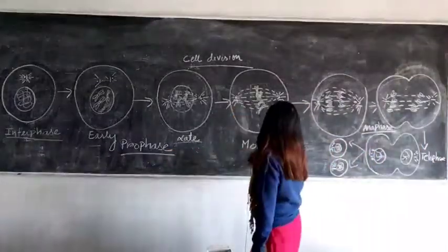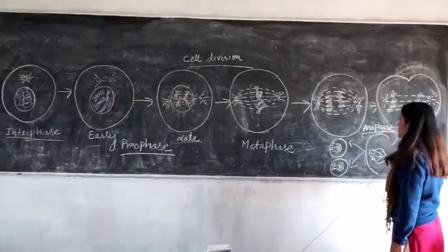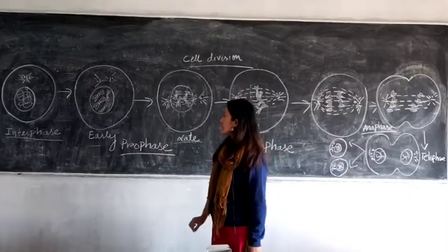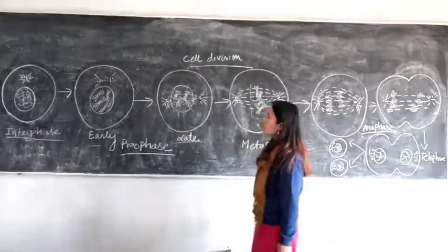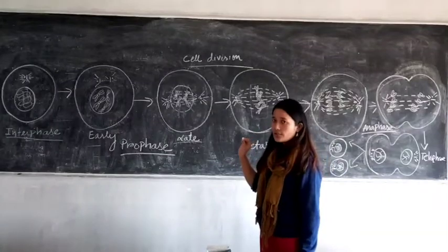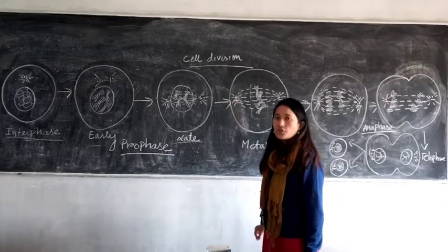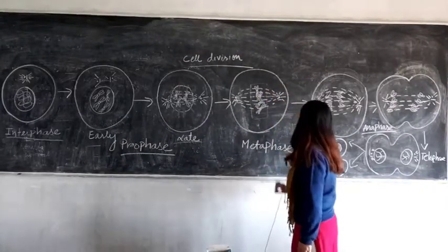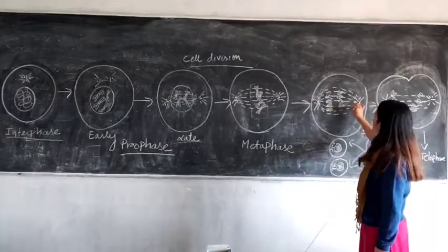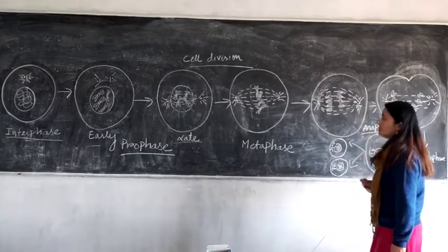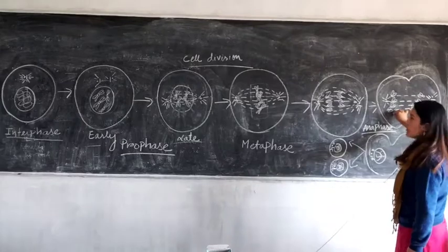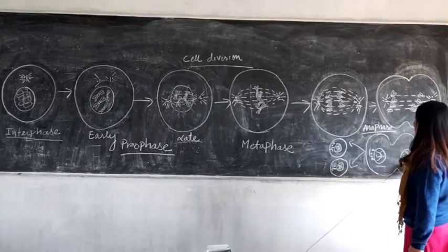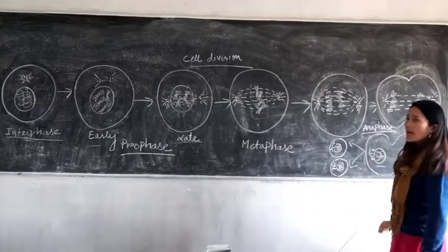Starting from prophase, metaphase, anaphase, and then telophase — these constitute karyokinesis. The distinct feature of prophase: nuclear membrane disintegrating, spindle fiber formation, duplication of centrioles. Metaphase: chromosomes lining up in the equatorial plane. Anaphase: sister chromatids moving to opposite poles along with furrow formation. Telophase: two nuclei formed, furrow deepening. All of this is karyokinesis.